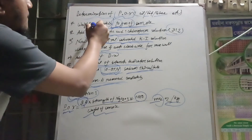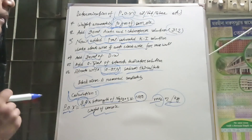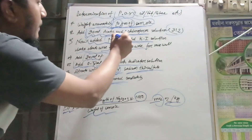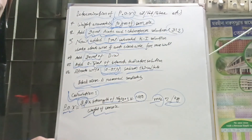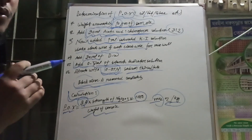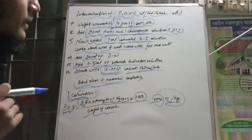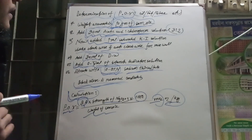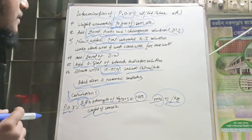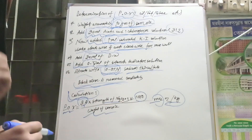First, we have 10 grams of sample. Then, we get 3-7 grams of sample. After measuring, the sample is maintained by vegetable.